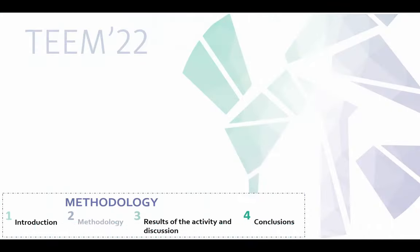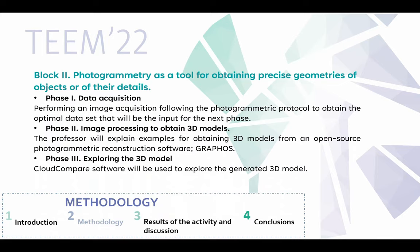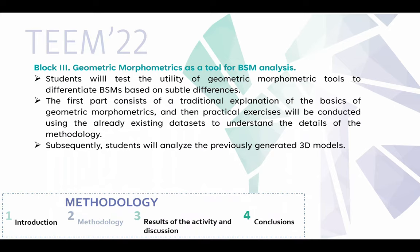In section 2, Methodology, we divided this section into three main blocks. Block 1 covers the use of new technologies for the study of bone surface modification through a traditional model, but also a reverse methodology that helps students develop their own work through different scientific journals, internet, and other resources. Block 2 is based on photogrammetry as a tool for obtaining precise geometries of objects at different detail levels, with three main phases: data acquisition, image processing to obtain 3D models, and the exploration of these models. This block uses a specific protocol for image capture of bone surface modification, and the modeling uses specific software.